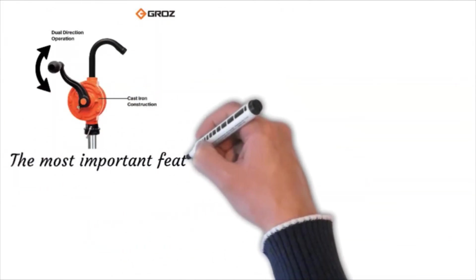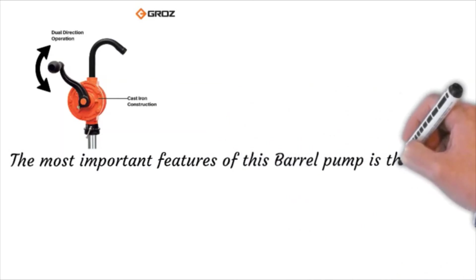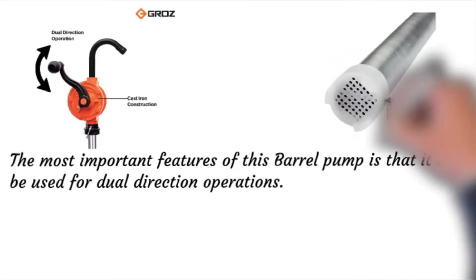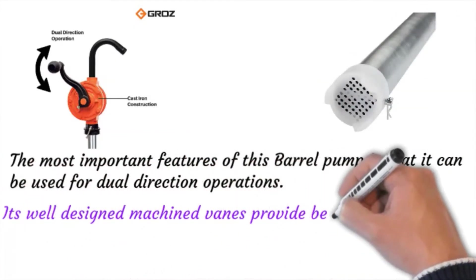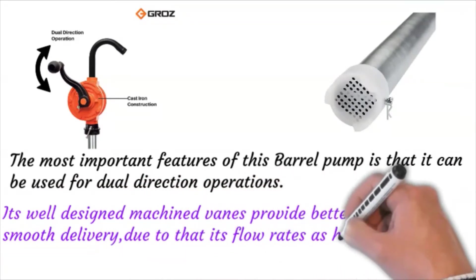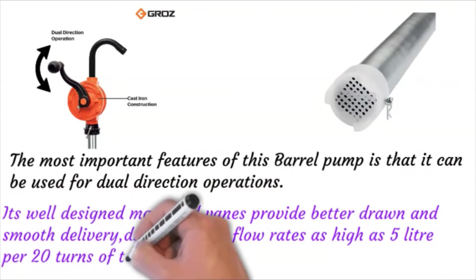The most important features of this barrel pump is that it can be used for dual direction operations. Its well-designed mechanism provides better drain and smooth delivery. Due to that, its flow rates are as high as 5 liters for 20 turns of the handle.